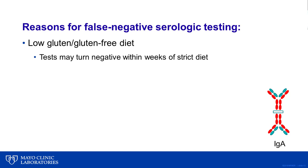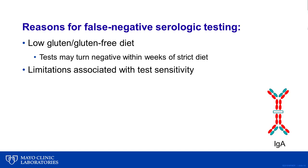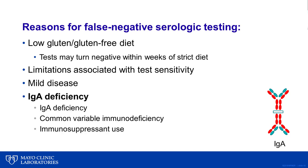False negative testing can occur if the patient has already begun following a gluten-free or low gluten diet — testing may turn negative within just weeks of a strict diet. In addition, no test has perfect sensitivity, so false negative results may occur due to technical limitations, and patients with mild disease may also have a negative test result. One of the most important reasons for a falsely negative test, which we will highlight today, is IgA deficiency.